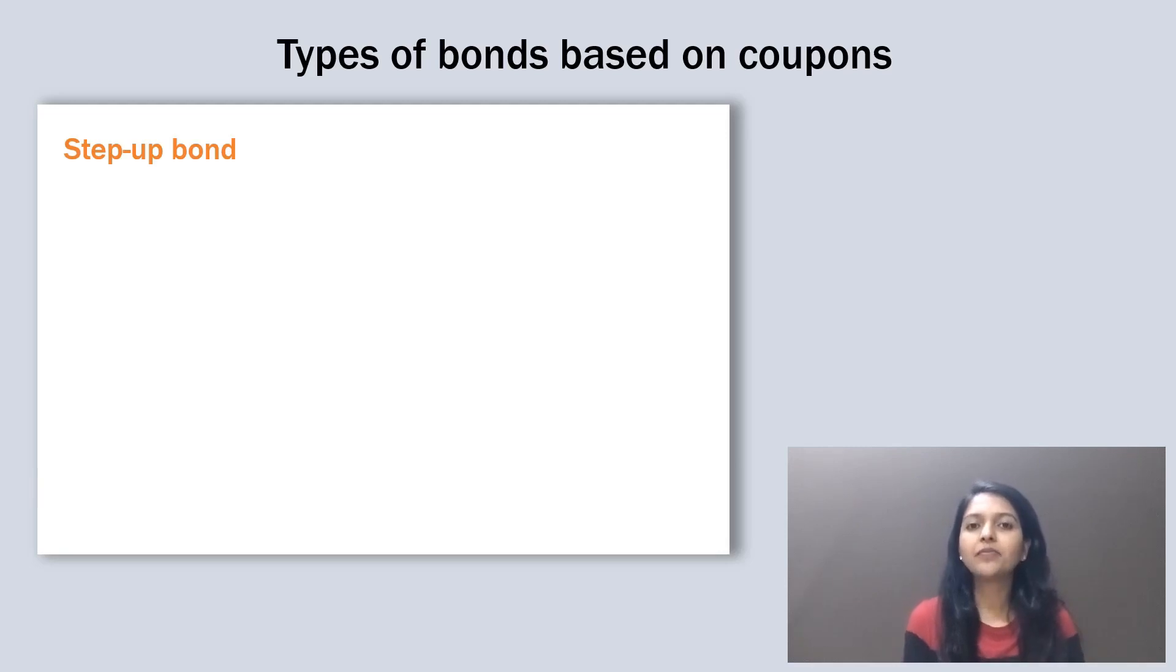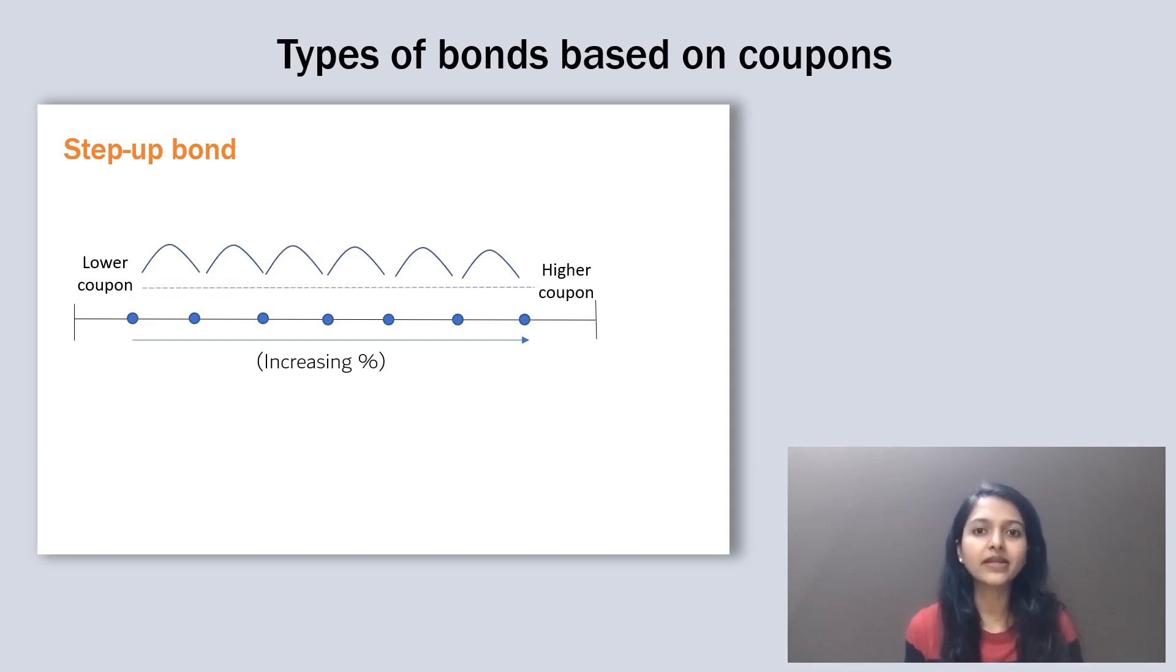Next is step up bond. When the bond's coupon rates step up, meaning it increases over time, is known as a step up bond. So initially it starts with a lower coupon rate which keeps increasing as per the pre-specified schedule. Now the extent to which the rates will increase, how frequently it will increase, and the timing will all depend on the terms of the bond. There's one more thing that the increase in the rates is not related to the market rates.